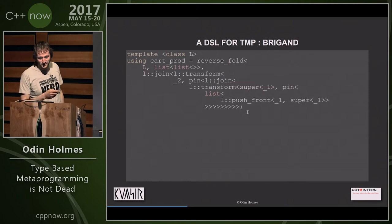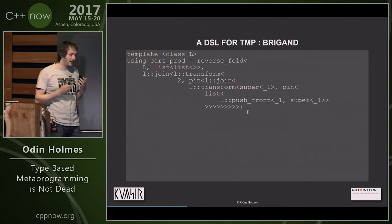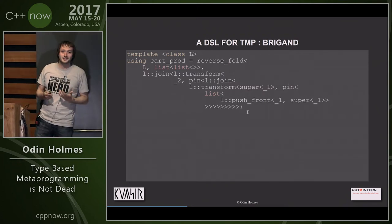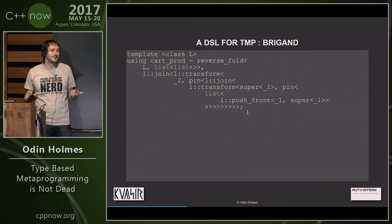You have to re-evaluate the entire thing, walking it, looking for placeholders, and evaluating it differently depending on whether they exist or not, for every single data point. That means it's slow — probably somewhere on the order of 3 to 4x slower than normal Brigand. So basically, my idea of a DSL for TMP failed.